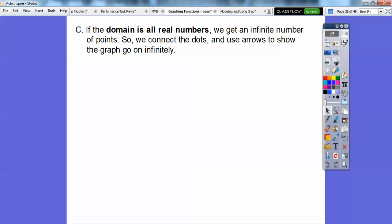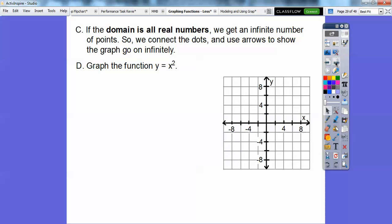So if the domain is all real numbers, we get an infinite number of points. We connect the dots when it's all real numbers, and we use arrows to show the graphs go on infinitely. You guys have probably graphed y equals x squared before, but we're going to graph this. When they didn't say domain issues, this is code word: domain is all real numbers, so we've got to graph them all.